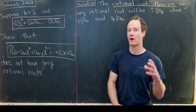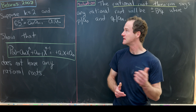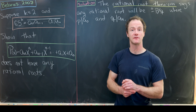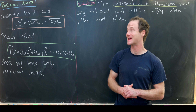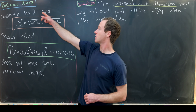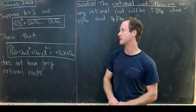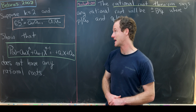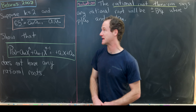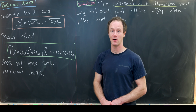Here I've got a nice problem about rational roots of a certain polynomial. This comes from a Belarusian math contest from 2007. We want to start by supposing that we have a natural number k that's bigger than or equal to 2, and then we have the decimal expansion of 65 to the k power.